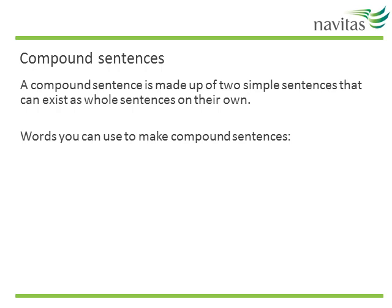We call the first example of joined sentences compound sentences, and the main thing to remember is that each of the two simple sentences should be able to stand on their own as a complete sentence. There's a group of words you can use to make compound sentences — all of which you would be very familiar with: for, and, nor, but, or, yet, and so. One way to remember this list is to think of the word FANBOYS. You do need a comma before you use one of these words. The only exception is with AND — the comma is often left out, but I would recommend using a comma when the sentence is quite long.